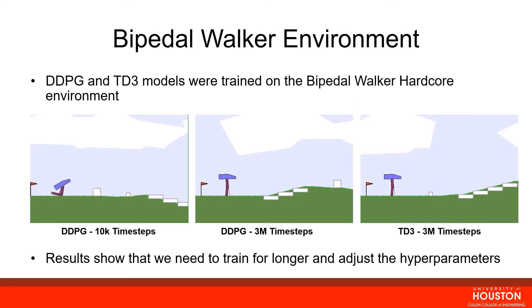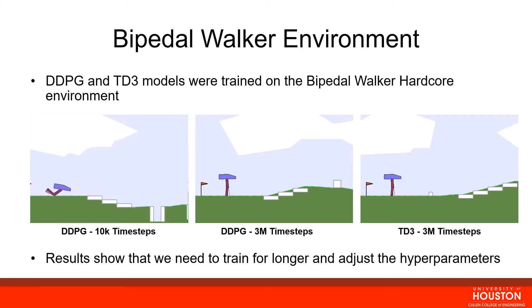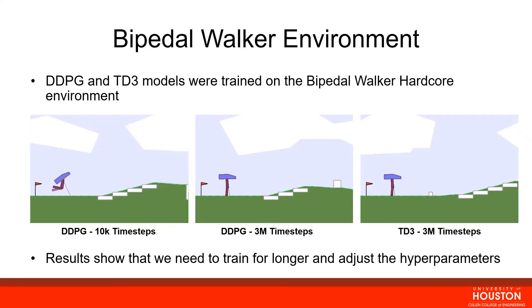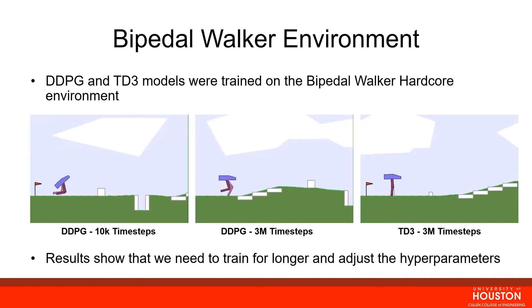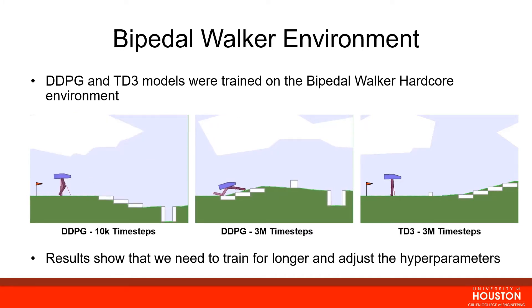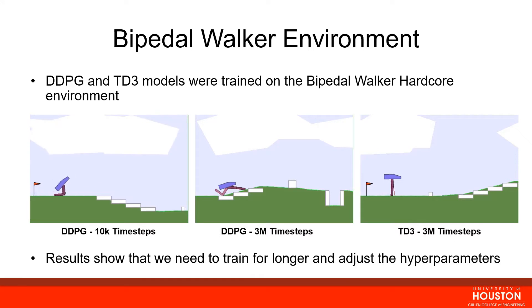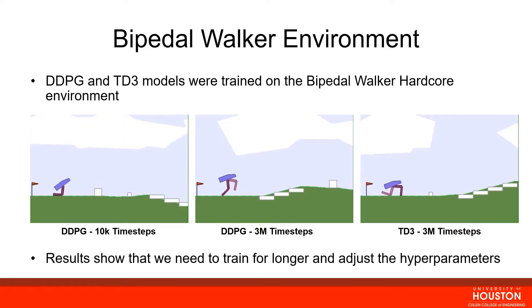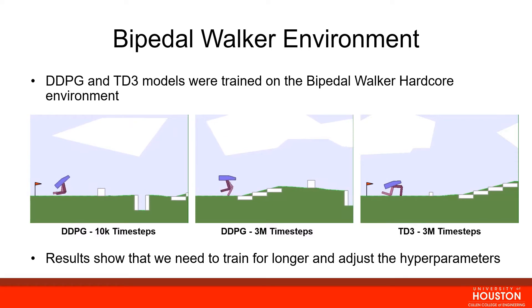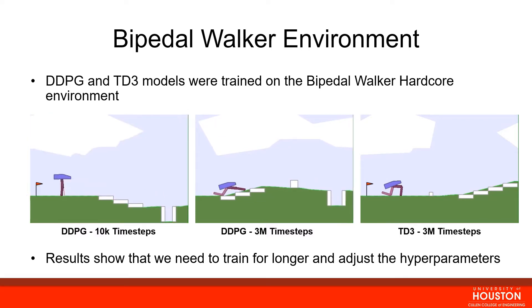The next environment is the bipedal walker environment, where a walker shown in purple with two legs attempts to traverse the environment. The environment continuously changes at the end of each episode, with obstacles as well as the overall landscape changing as each episode terminates.